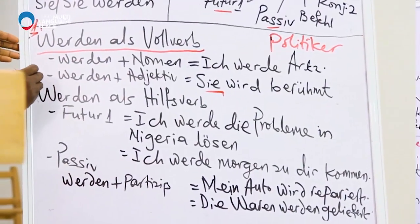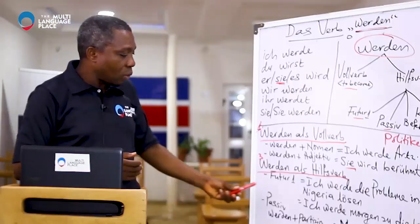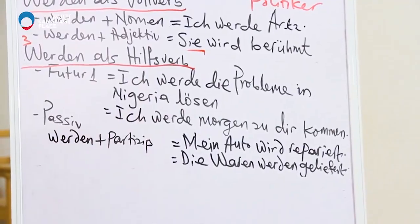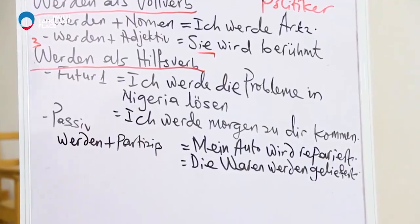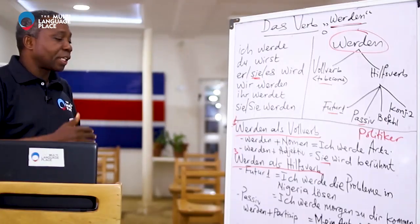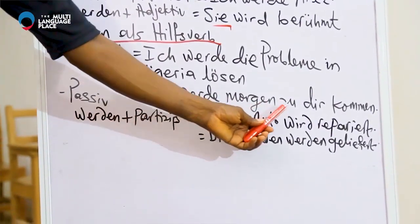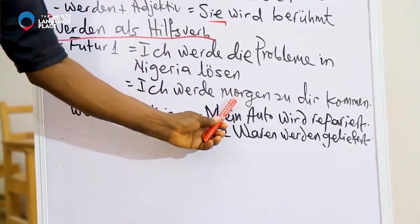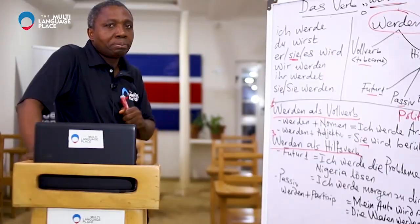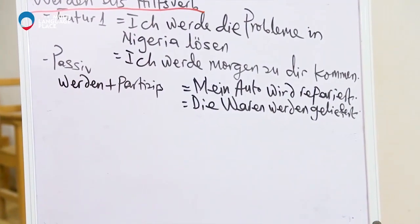We come to the next use: werden plus infinitive verb, used to express the future — Futur I. Ich werde die Probleme in Nigeria lösen — I will solve the problems in Nigeria. Another example: Ich werde morgen zu dir kommen — I will come to you tomorrow. So, werden can be used to express what you will do in the future.